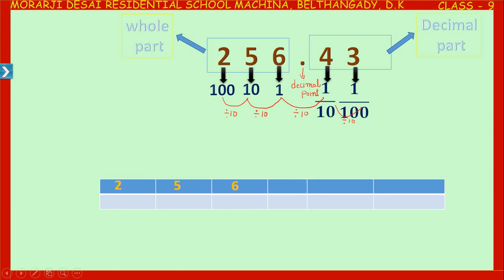Let us write 256.43 on the place value table. On the left side write ones, tens, hundreds; after the decimal point the place value is tenths, then hundredths, then thousandths, and so on. Observe the difference: after the decimal point we have 'tenths' — not 'tens' — and 'hundredths' with 'th' added, then thousandths and ten-thousandths.